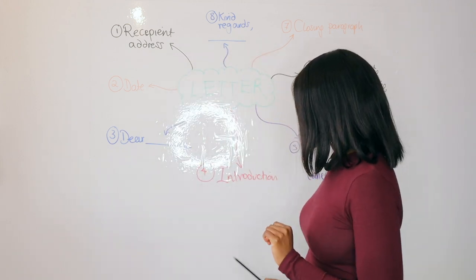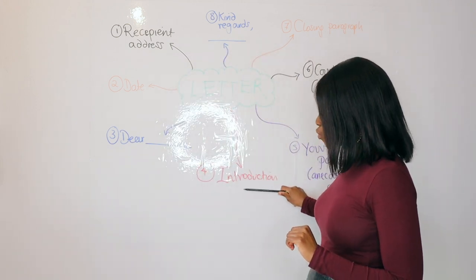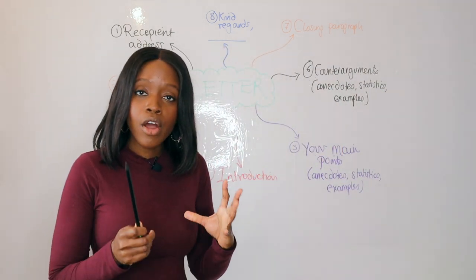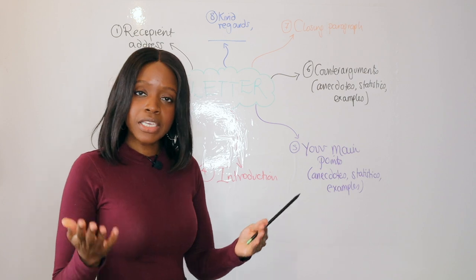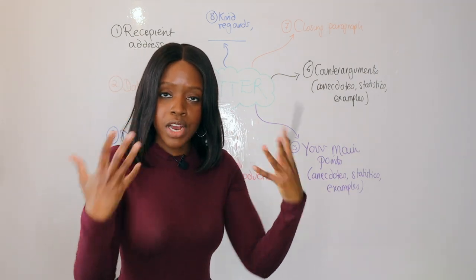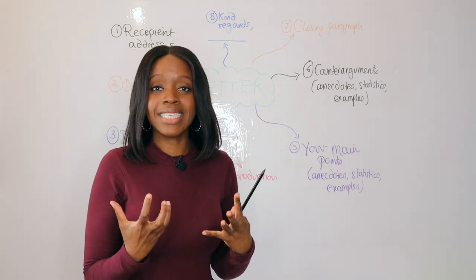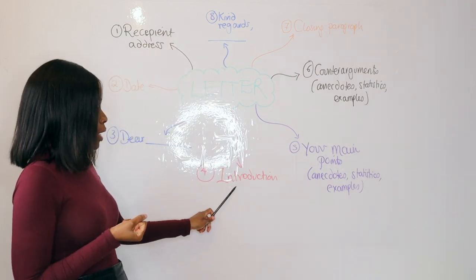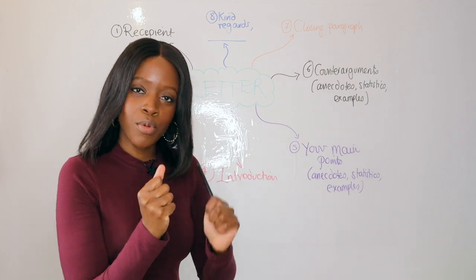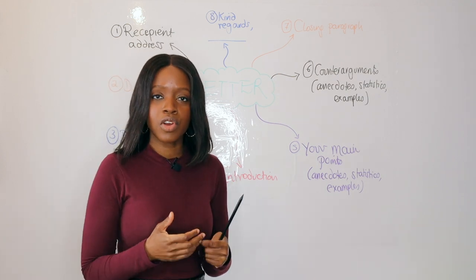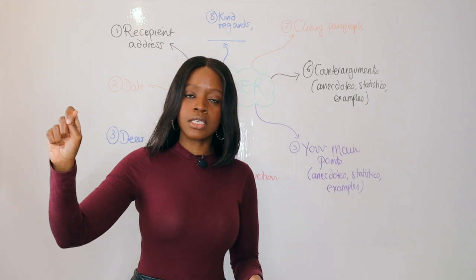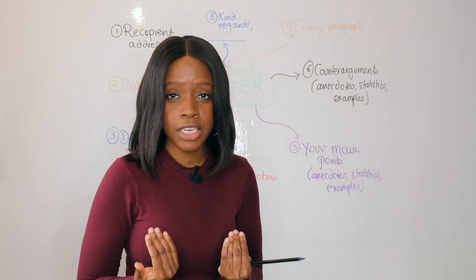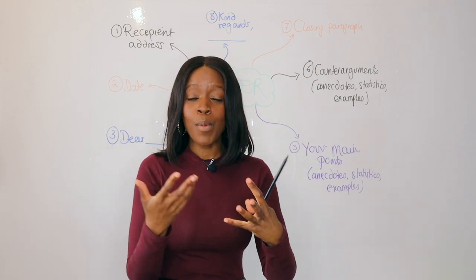Step number four is where you introduce the issue you are writing about — this is your first full paragraph. You're introducing why you are writing to them. Going back to the example, you're writing about climate change and want to make the case that it's really important. A good way to start is to create a little bit of friction rather than saying 'I am writing this letter to talk about climate change' — that's really boring.